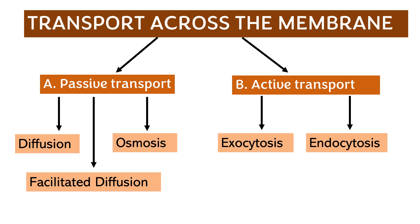What drives passive transport is the difference in concentration gradient in the cell. For example, there is an area of high and low concentration inside or outside of the cell. Thus, passive transport happens when substances move from an area of higher concentration to an area of lower concentration. The three types of passive transport are diffusion, osmosis, and facilitated diffusion.